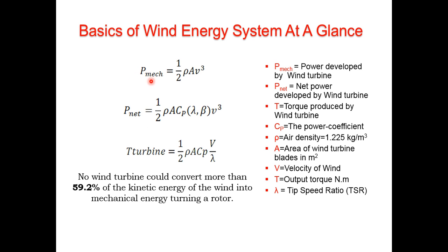First I'll cover the fundamental aspects briefly. There is a critical term known as the Betz limit. You will find its derivation in a number of books and lectures. It states that no wind turbine could convert more than 59.2% of the kinetic energy into mechanical energy turning a rotor.